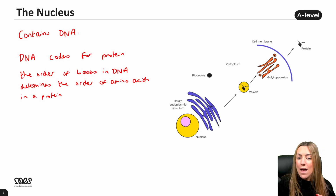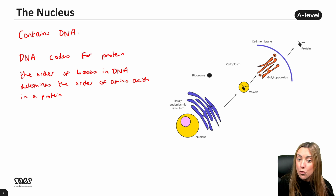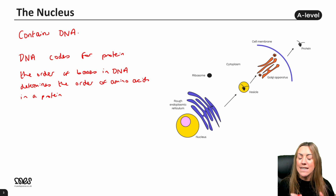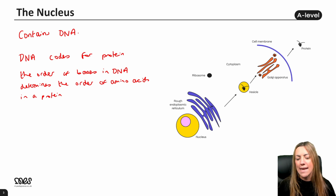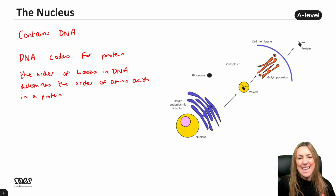Later in Year 12 you'll learn exactly how that works in the process of transcription, whereby the order of bases in DNA determines the order of bases in messenger RNA, which then goes to the ribosomes where the genetic code is used to put those amino acids together in the correct order.